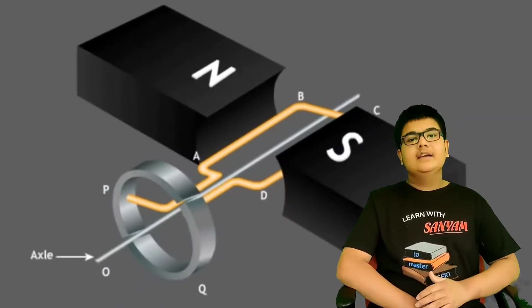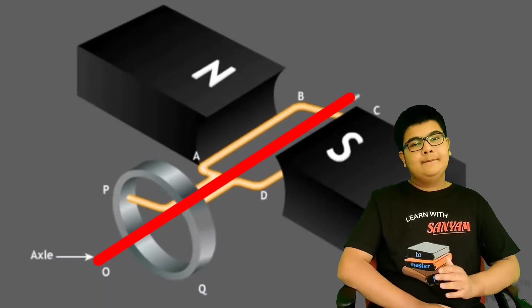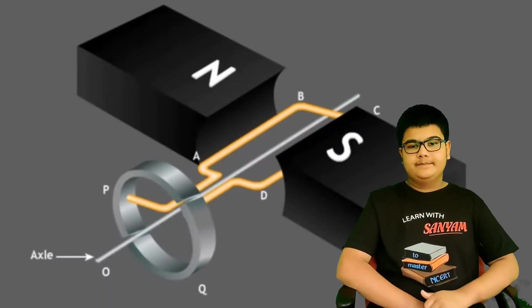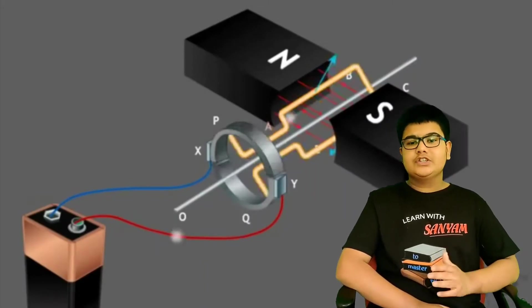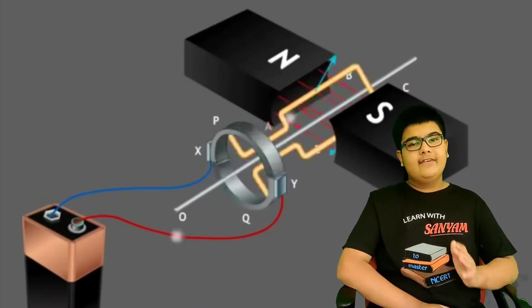Fifth, axle. Axle is placed between the split rings and provides support to them. And a circuit consisting of a battery and a switch is also connected to the brushes X and Y.